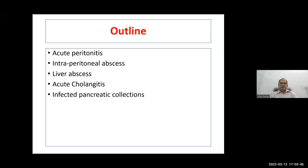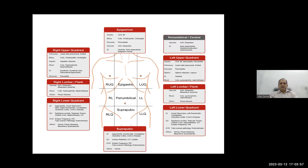I will briefly discuss acute peritonitis, intraperitoneal abscesses, liver abscess, acute cholangitis, and infected pancreatic collection post-acute necrotizing pancreatitis. Brief anatomy: the abdomen is divided into nine quadrants by two horizontal and two vertical lines.